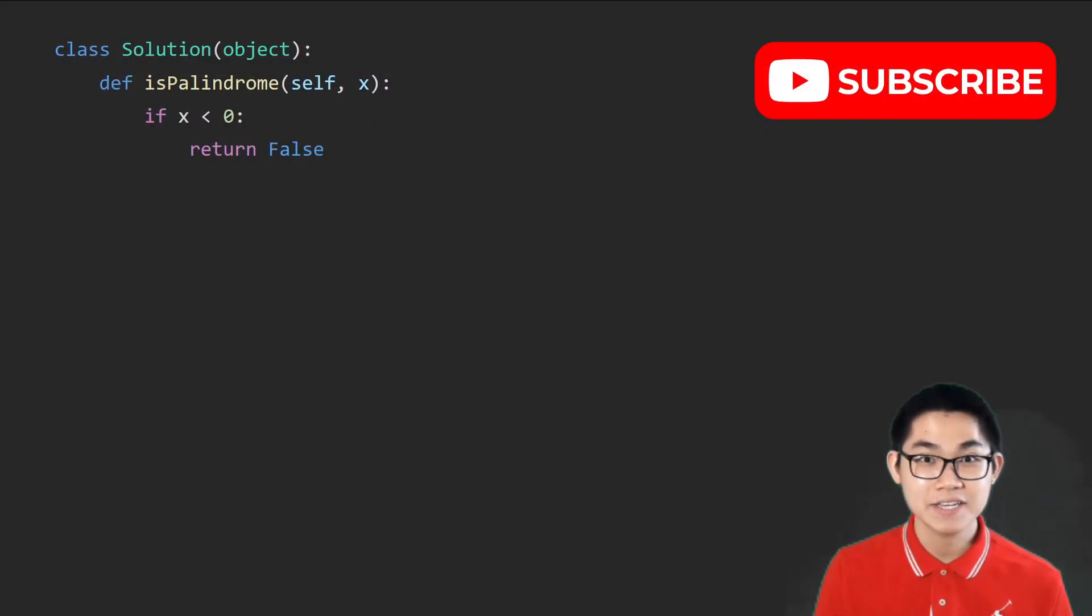If x is negative, then it's not a palindrome number, so we just return false. If x is 0, and this is kind of a special case, then we know that 0 is a palindrome number and we just return true. And from here on, we're only looking at positive numbers.